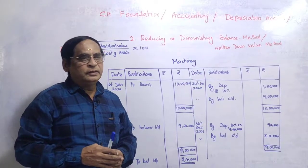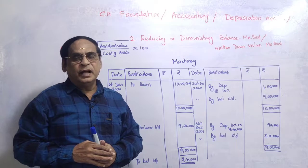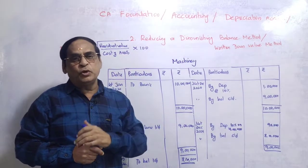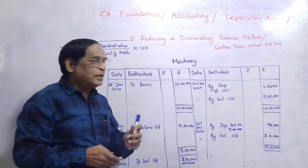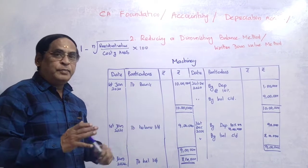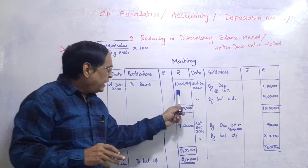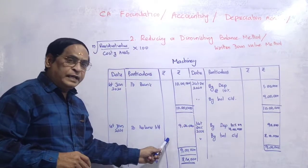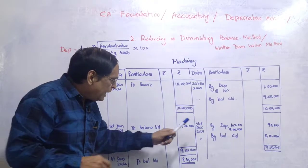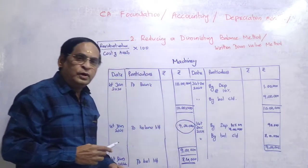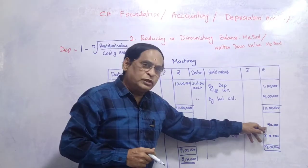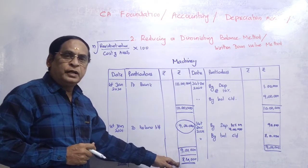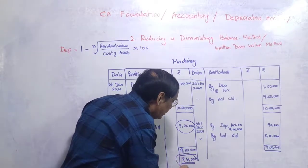The next method is the Written Down Value method, also called the reducing balance method or diminishing balance method. Here, depreciation is applied on the reduced balance each year, so it keeps declining. For example, machine cost is 10 lakhs, depreciation rate is 10%. First year: 10% on 10 lakhs = 1 lakh; balance is 9 lakhs. Second year: 10% on 9 lakhs = 90,000; balance is 8 lakhs 10,000. Third year: 10% on 8,10,000 = 81,000.